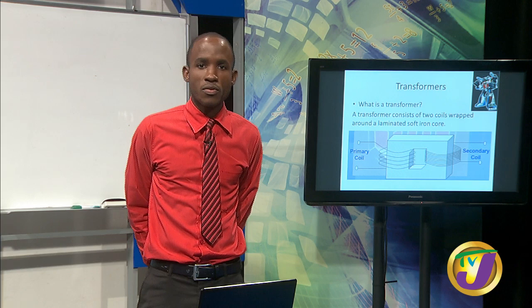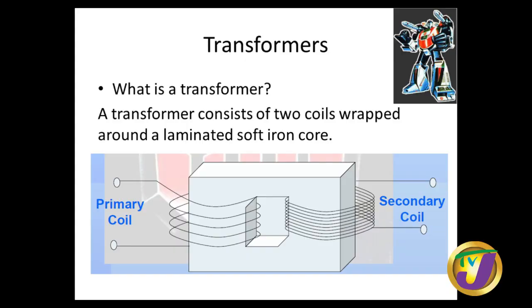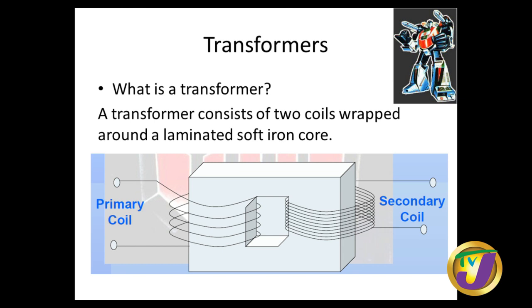Welcome back to Schools Not Out, where we are discussing CSEC physics. Before we left, we were talking about coils of wire, induced current, AC signals — all of that. As I said before, this is leading up to what I need to get to, which is talking about transformers.